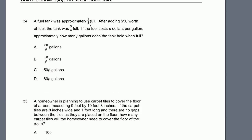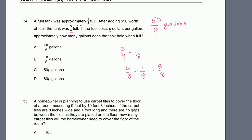Problem 34. A fuel tank was approximately one-eighth full. After adding $50 worth of fuel, the tank was three-fourths full. Fuel costs P dollars per gallon, so we added 50/P gallons. Going from one-eighth to three-fourths means we added 6/8 − 1/8 = 5/8 of a tank. So 50/P gallons equals five-eighths of a tank.